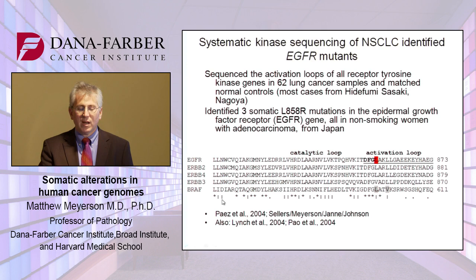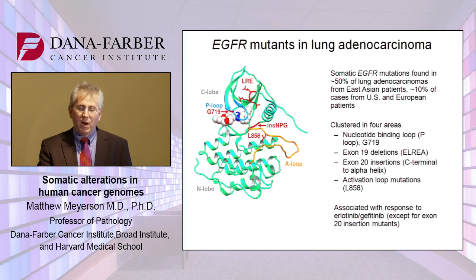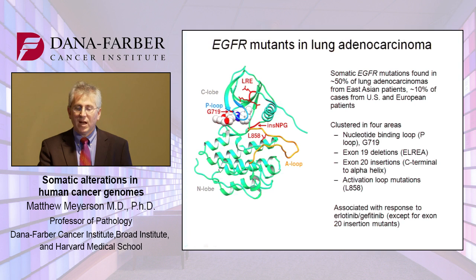In addition to our work — a collaboration with Bill Sellers, Paciana, Bruce Johnson, Neil Lindeman, and others — there was also work from Tom Lynch and Daniel Haber, and from William Pao and Harold Varmus making the same discovery. Strikingly, we found somatic EGFR mutations in about 50% of lung adenocarcinomas from patients from East Asia — originally from Japan, but also from Korea, China, and other East Asian countries. In contrast, only about 10% of cases from U.S. and European patients.